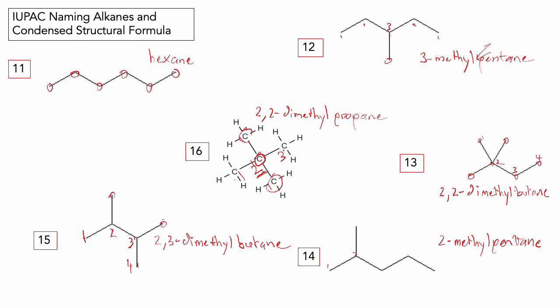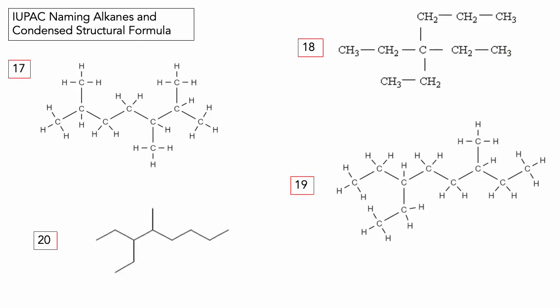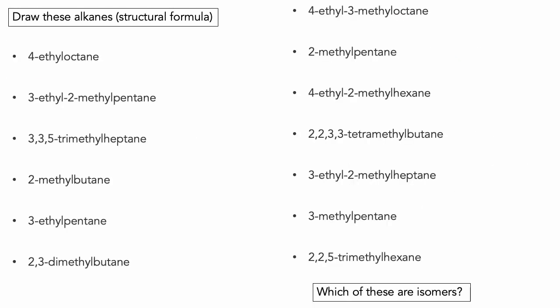Don't forget your prefixes for multiple groups: di-, tri-, tetra-. There are a few more naming exercises for you to do — the answers are on Canvas. Over the next couple of pages, it's asking you to draw these alkanes as structural formulae, showing the bonds and locations and types of atoms. There's also a question asking which of these are isomers — work out the molecular formula and see which share the same formula but different names, such as different C6 or C8 isomers.